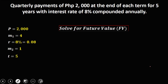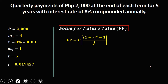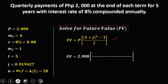To solve for the future value, we use the future value formula. J is 0.019427, and N equals M1 times the time: 4 times 5 equals 20. Substituting all values: P is 2,000, times (1 plus J, that's 0.019427, to the power N which is 20, minus 1), divided by J, which is 0.019427.